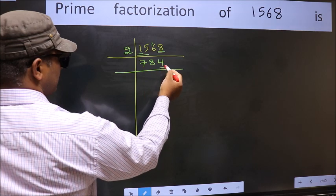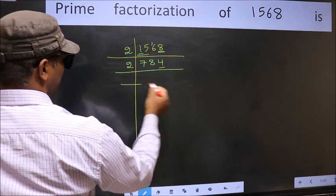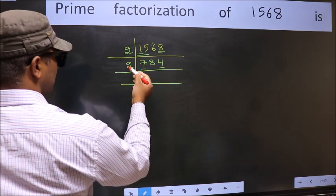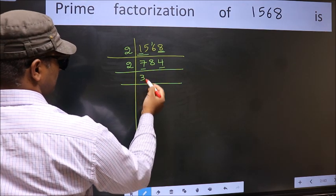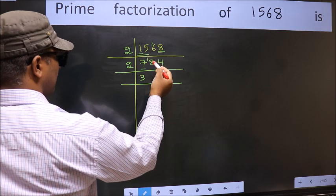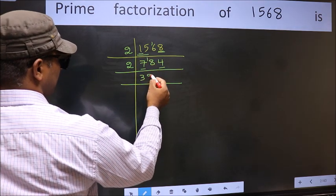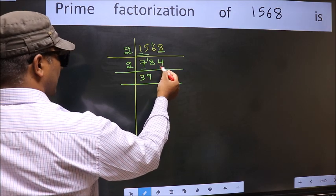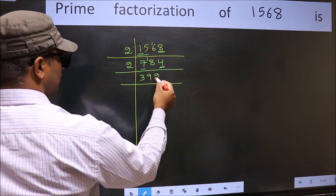Now the last digit is 4, which is even, so take 2. First number is 7. A number close to 7 in the 2 table is 2×3=6. 7-6=1, carry forward 1, giving 18. When do we get 18 in the 2 table? 2×9=18. The other number is 4. When do we get 4 in the 2 table? 2×2=4.